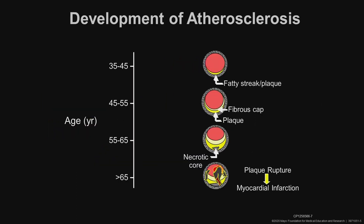If we think about heart disease, we think about traditional atherosclerosis leading to a myocardial infarction. If you look at a coronary artery, we see there's a progression of plaque in that coronary artery, and for some reason that plaque ruptures, which can occlude that artery leading to a myocardial infarction — either an ST elevation myocardial infarction or a non-ST elevation myocardial infarction, depending on the decrease in blood flow to that area of the myocardium.